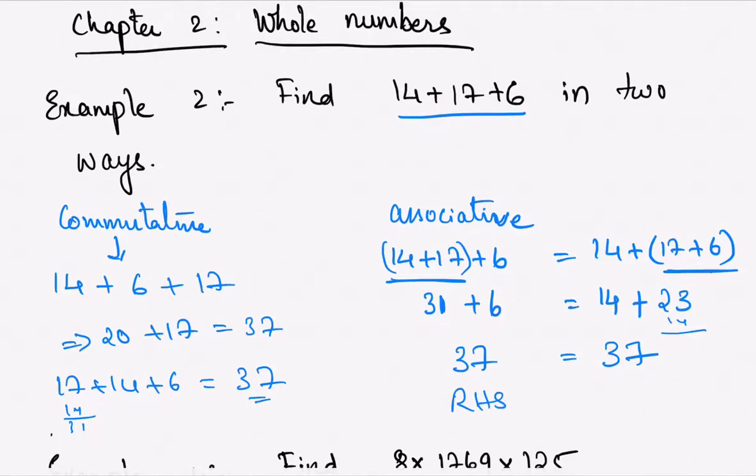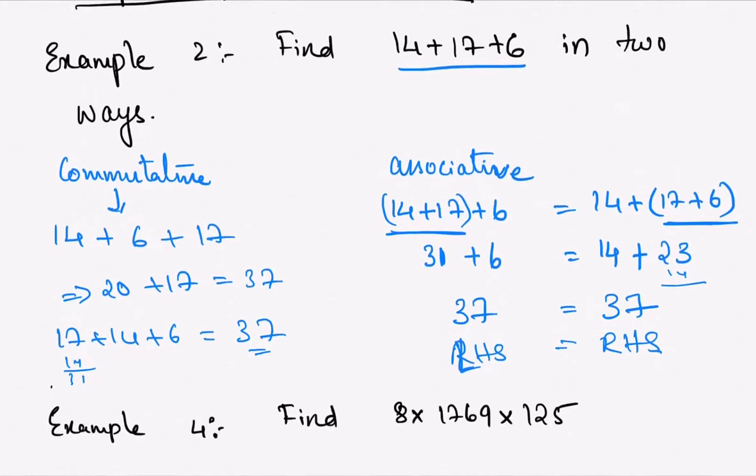Therefore, the left-hand side equals the right-hand side. By using associative property and commutative property, we were able to solve this example in two different ways. Now let's solve one more example.